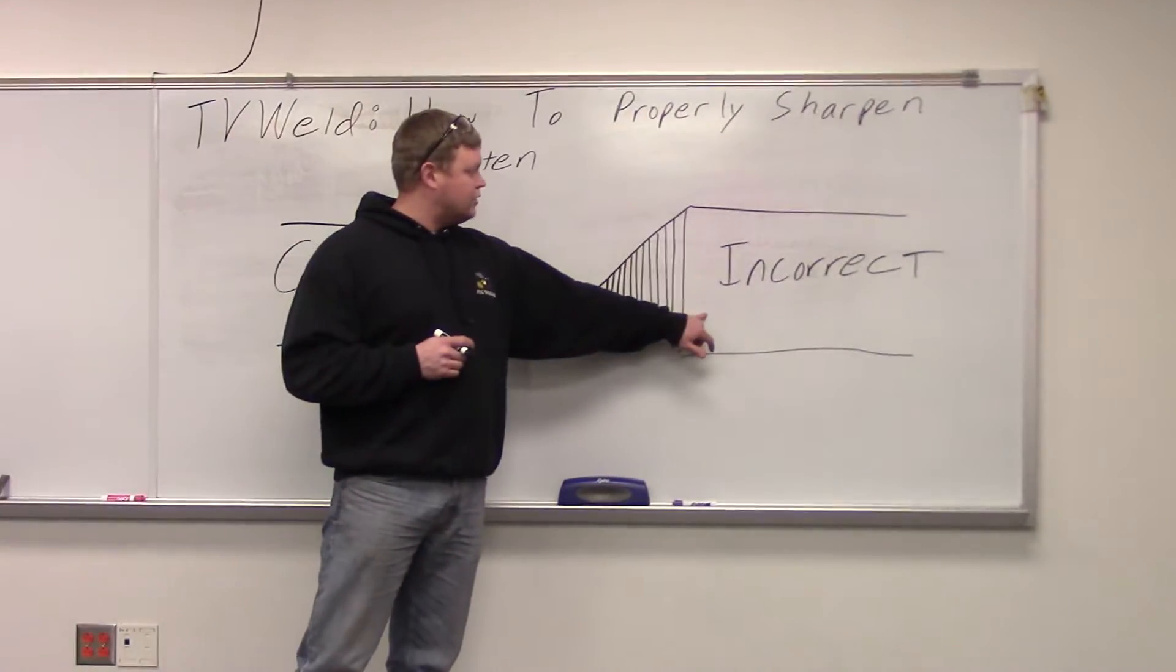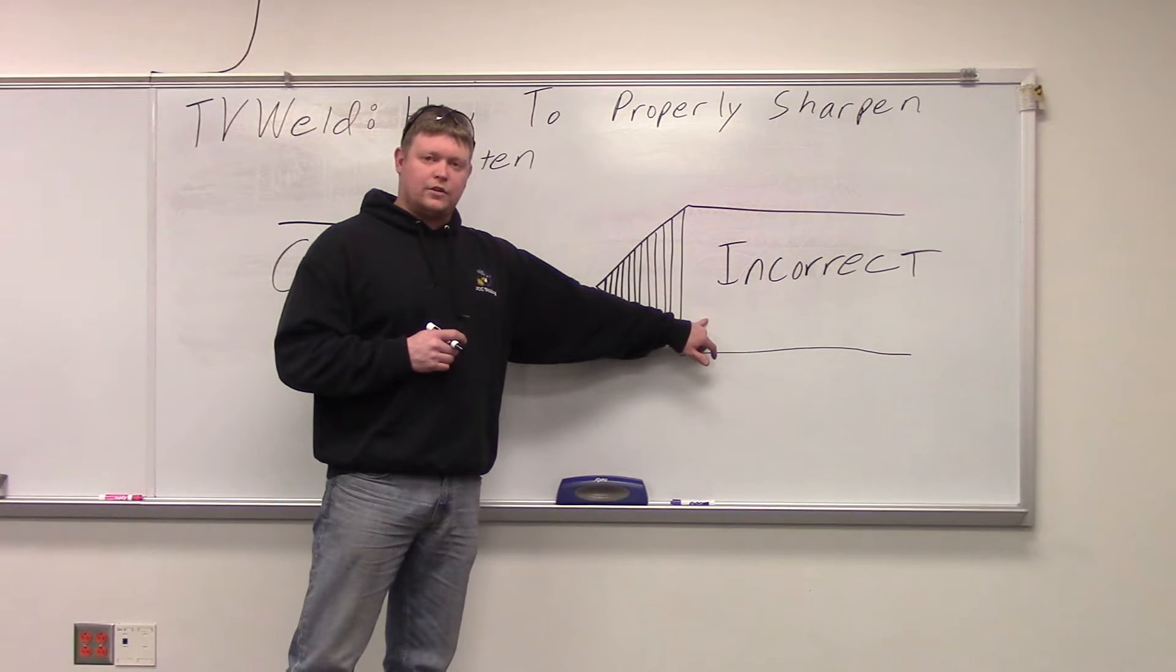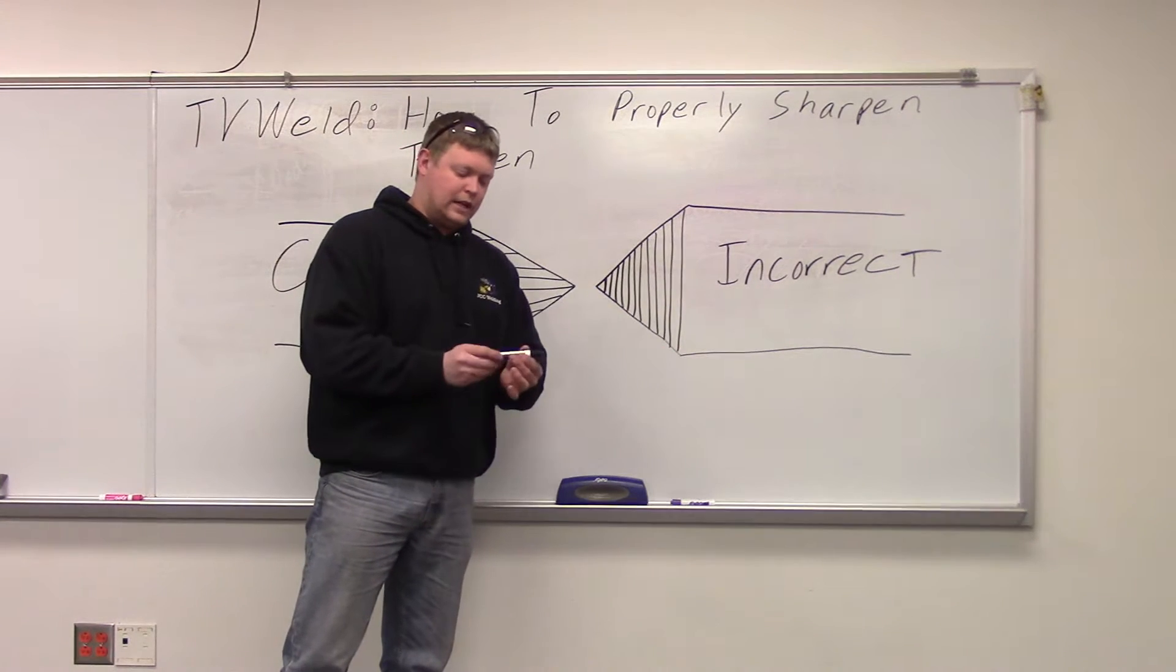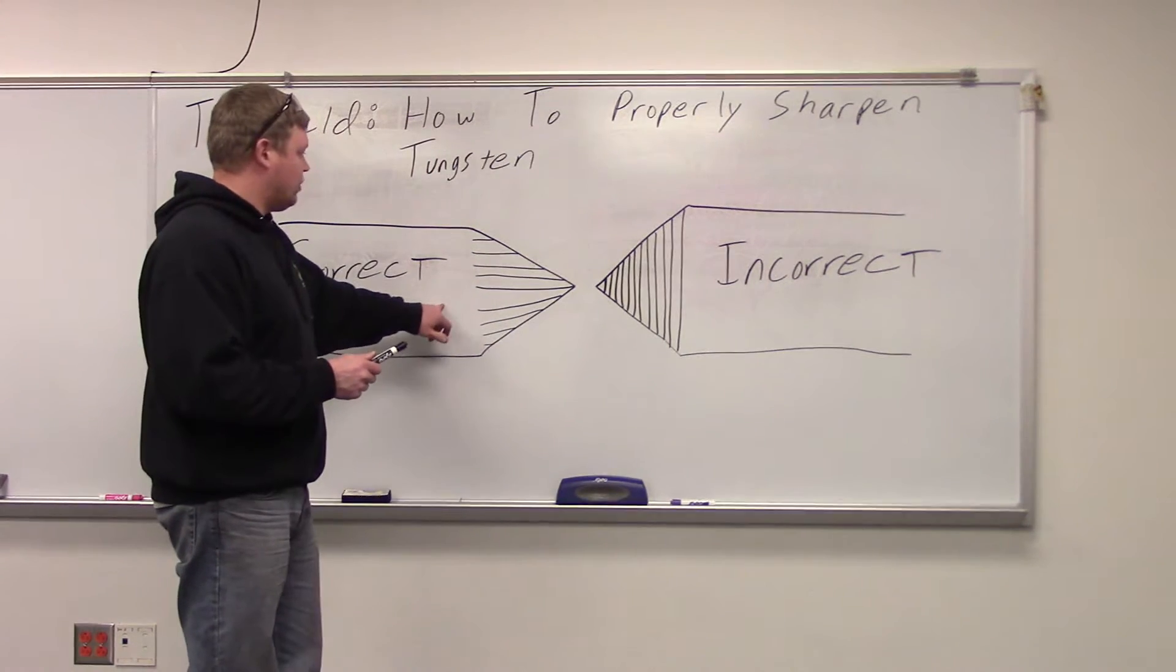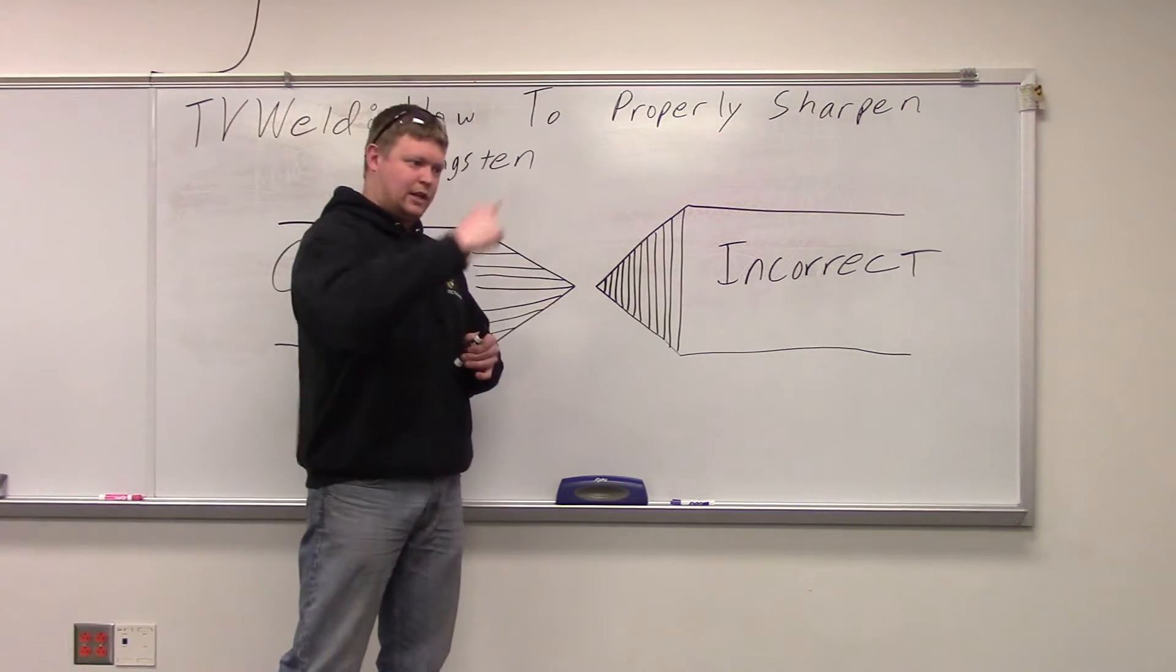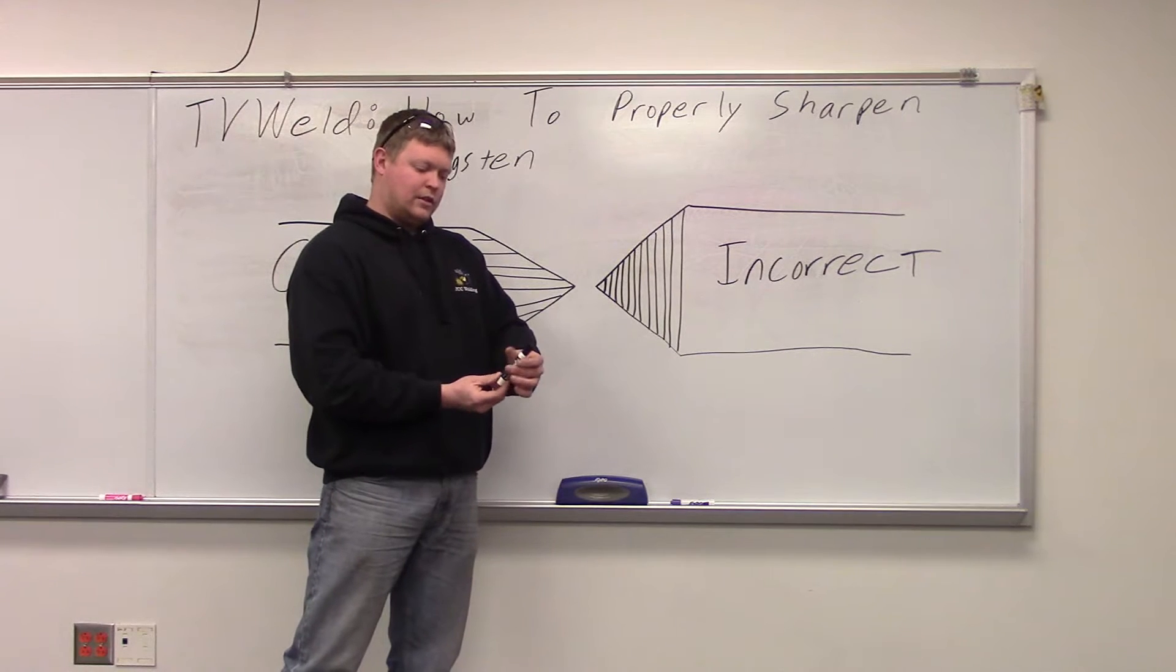This is when you have your tungsten perpendicular to your stone when you're grinding. So you're holding it kind of like this and spinning it. This is when you're going with the stone. So if the stone is coming like this, you're going to be like this.